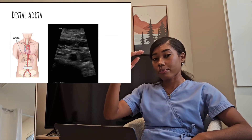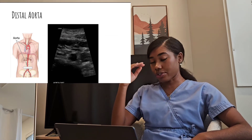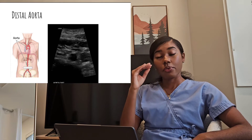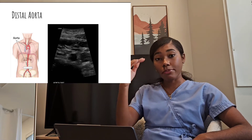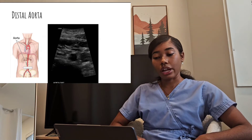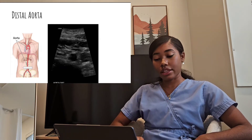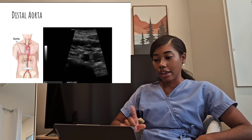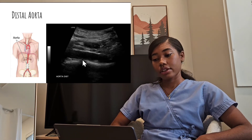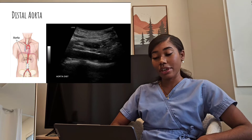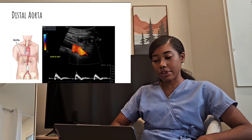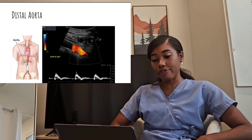Then scan back and make sure to image the distal aorta, because that's where you know you're right above the bifurcation. When you have your nice round image, take the 2D transverse and measure anterior to posterior, also take a longitudinal image, measure anterior to posterior again, and take your spectro-Doppler waveform.